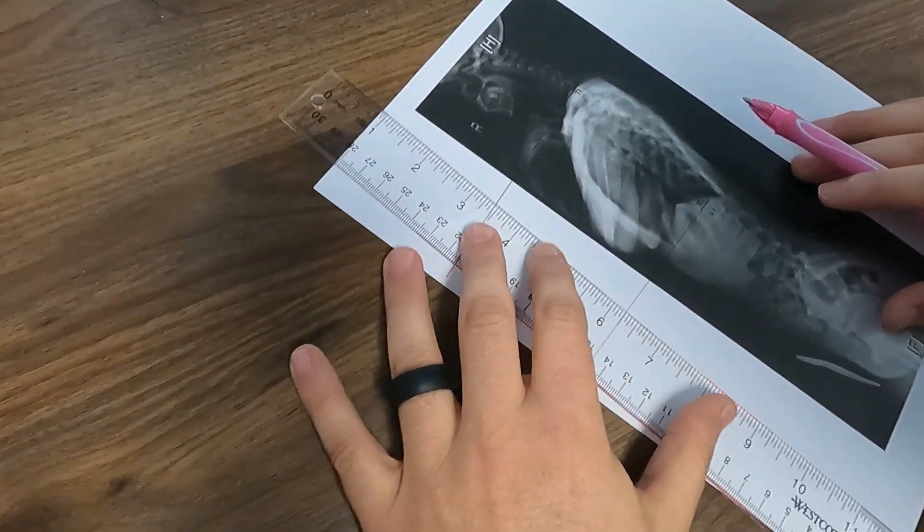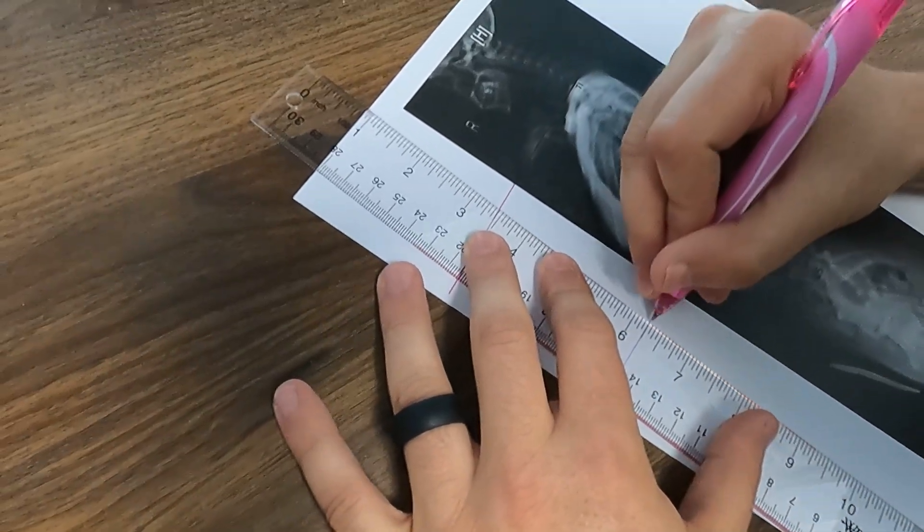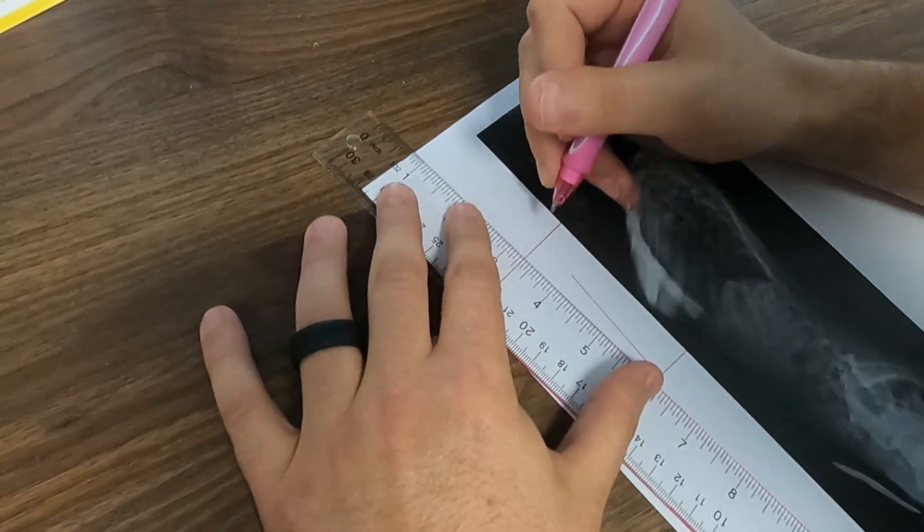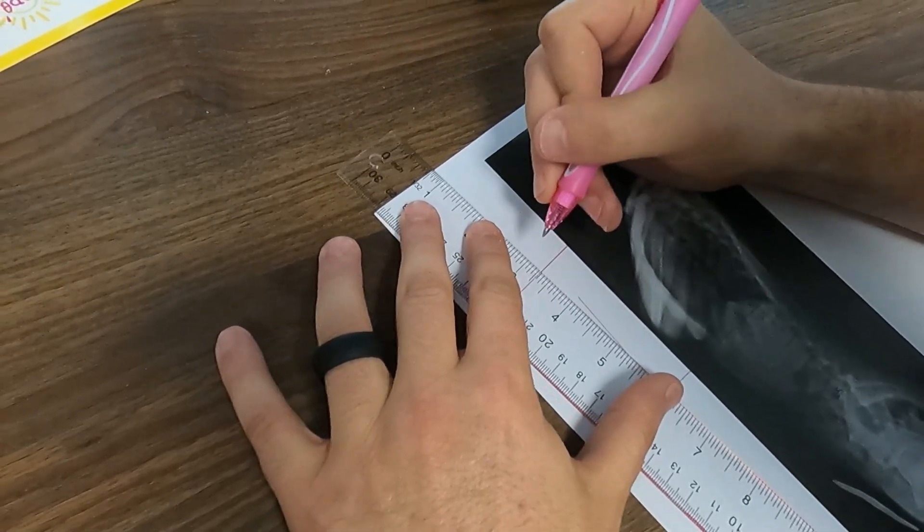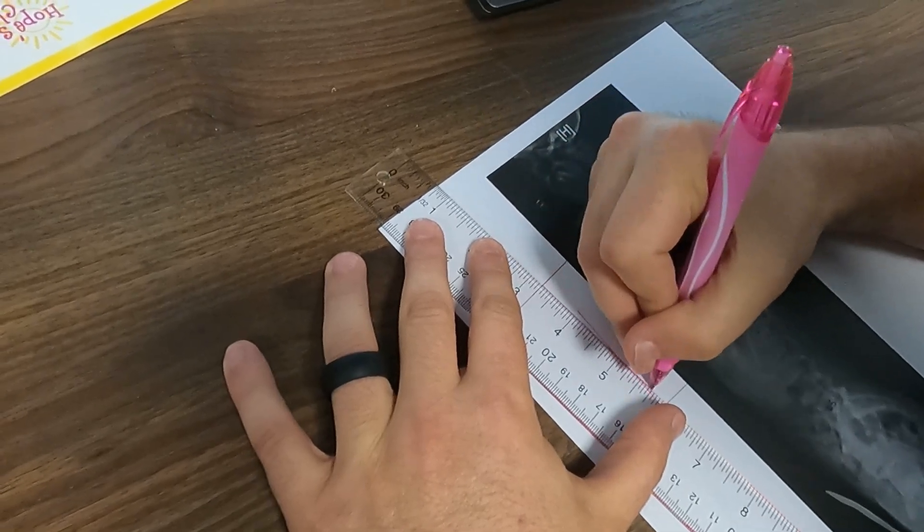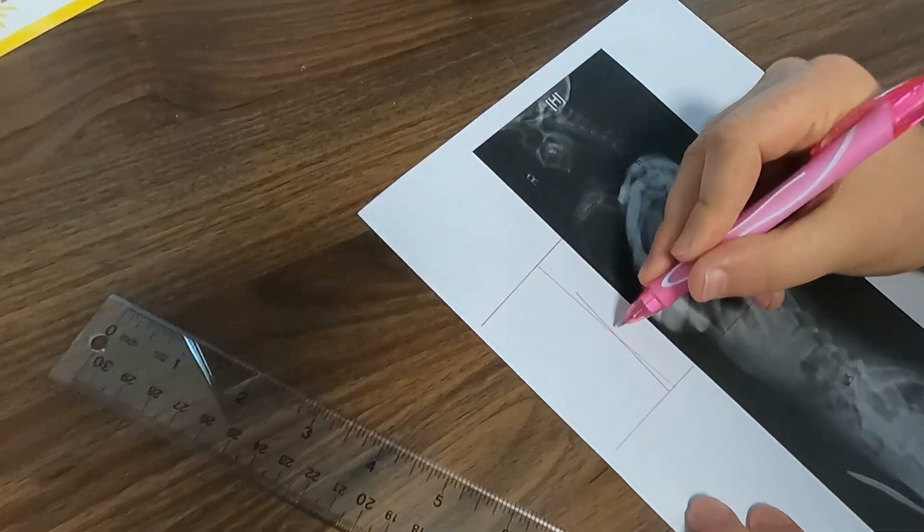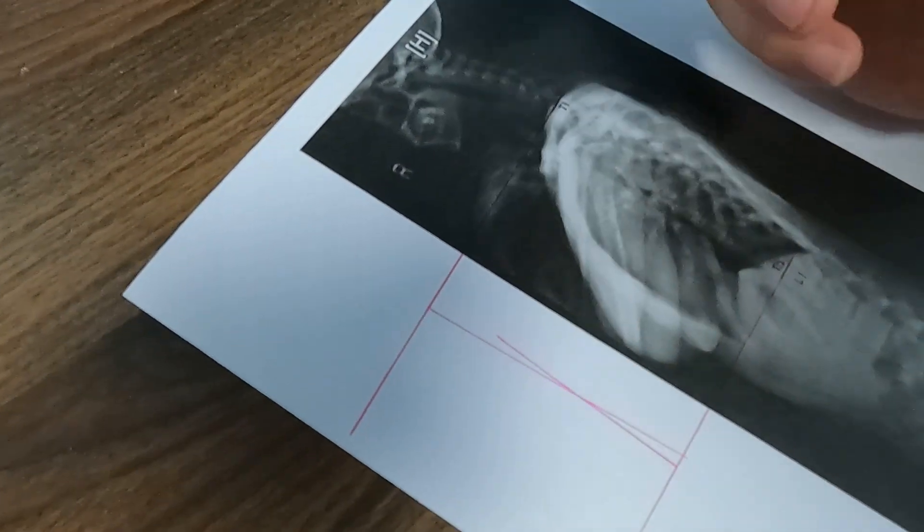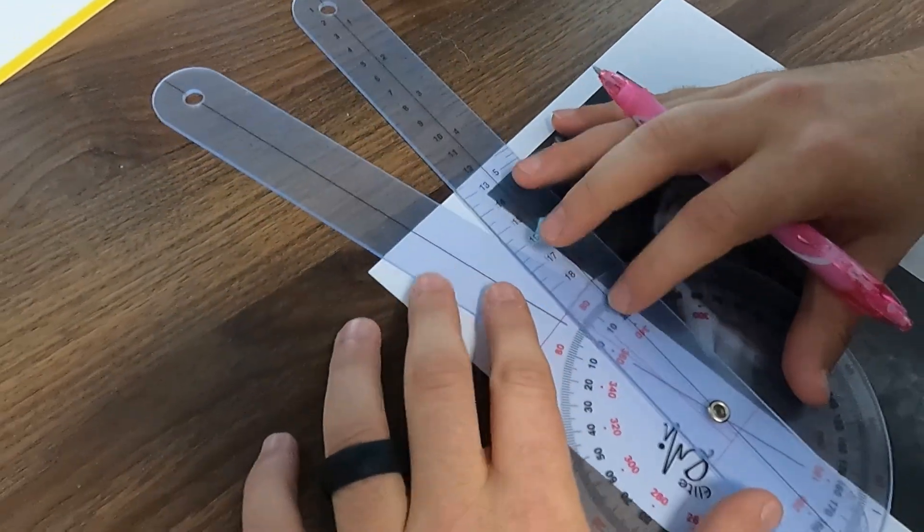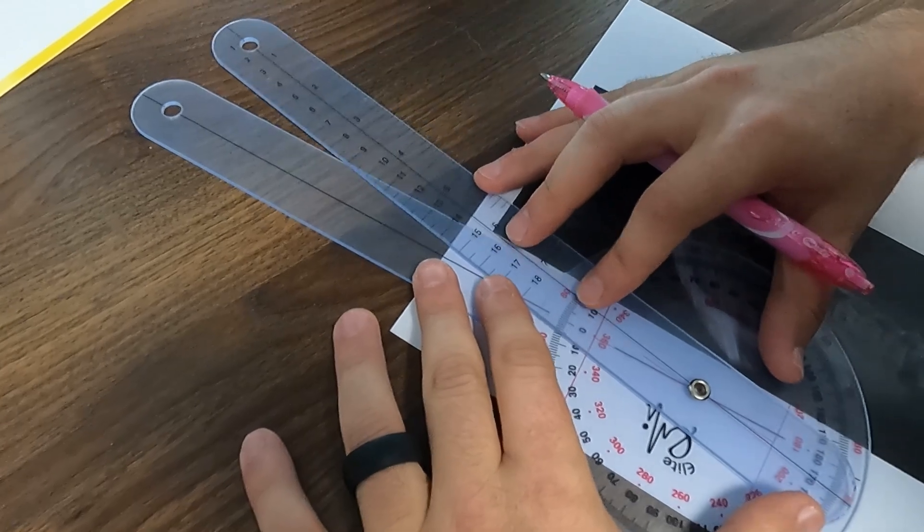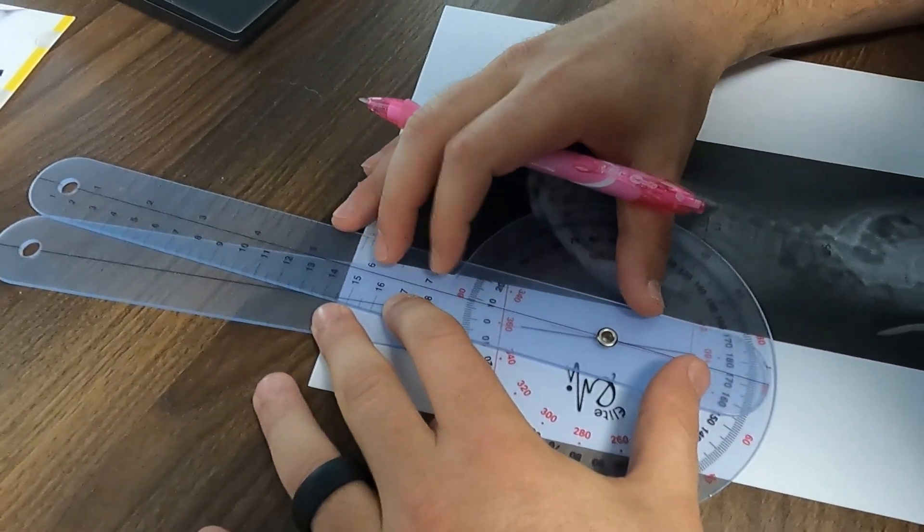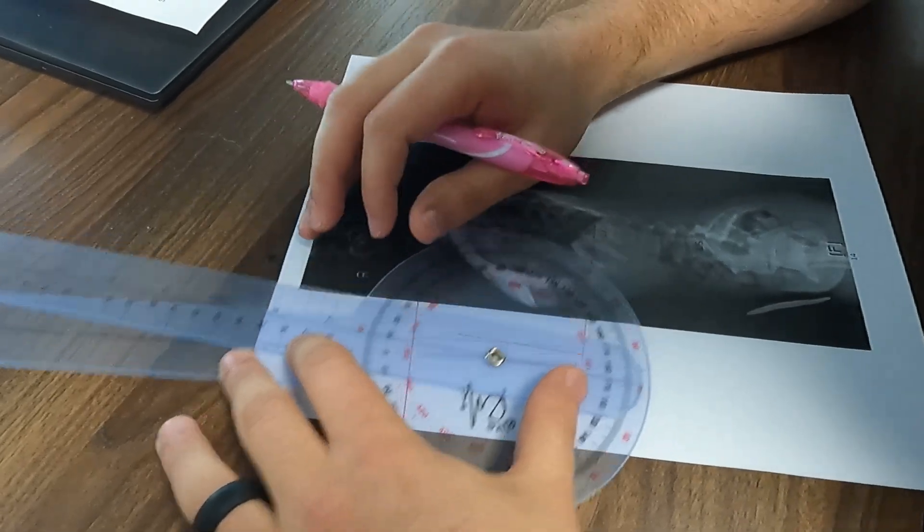So again, we're going to take these lines and we're just going to go perpendicular to the line up. Perpendicular to the line going down so that these cross right here. And then we can measure this angle. So as you can see, this is a pretty small thoracic kyphosis. This one I've got measured at eight degrees.